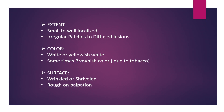The extent of involvement may vary from small, well-localized, and irregular patches to diffuse lesions involving a considerable portion of oral mucosa. Multiple areas of involvement are not uncommon. The lesion may be white or yellowish-white, but with heavy use of tobacco it may appear brownish. The surface of the lesion is often finely wrinkled or shriveled in appearance and may feel rough on palpation.